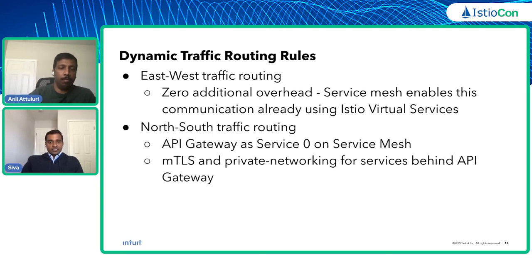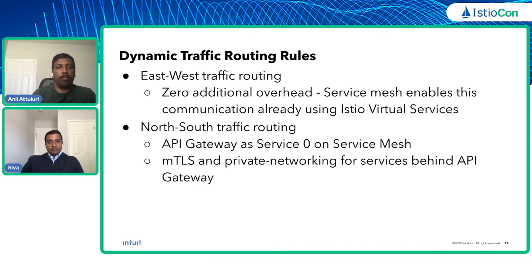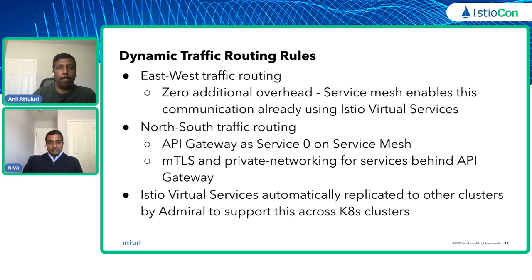For north-south traffic routing we are using API gateway, which acts as a service zero in the service mesh. Traffic from external clients is received at the API gateway, which routes the request through the service mesh to target services. From that point onward, private networking is used and all traffic is sent over mutual TLS. We are also using Admiral to copy virtual services from one cluster to others — Admiral syncs virtual services created in one cluster to all other clusters in the multi-cluster service mesh.